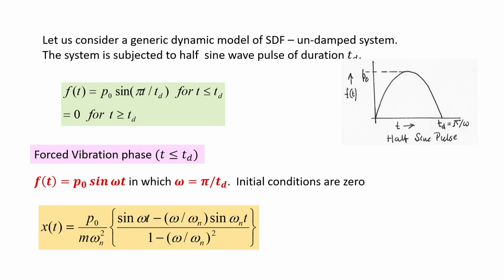Today our excitation will be a half-sine pulse wave — a pulse wave of half period is taken into consideration. We express the equation for the excitation as f(t) = p₀ sin(πt/t_d) for t less than t_d, where t_d is the duration of the pulse. After t_d, the force is zero. So the system is subjected to forced vibration when the force function is a sine function, active for duration t_d.